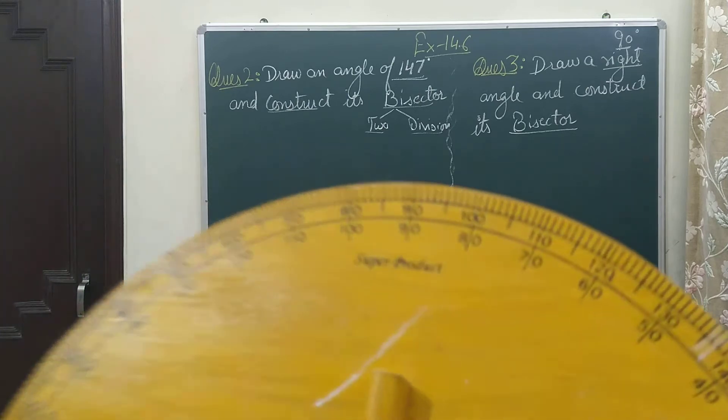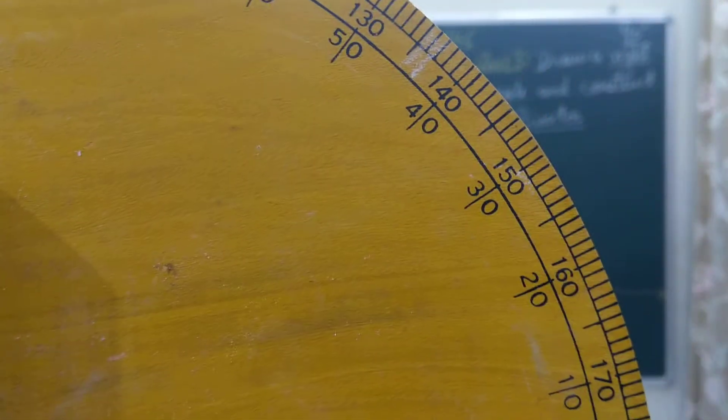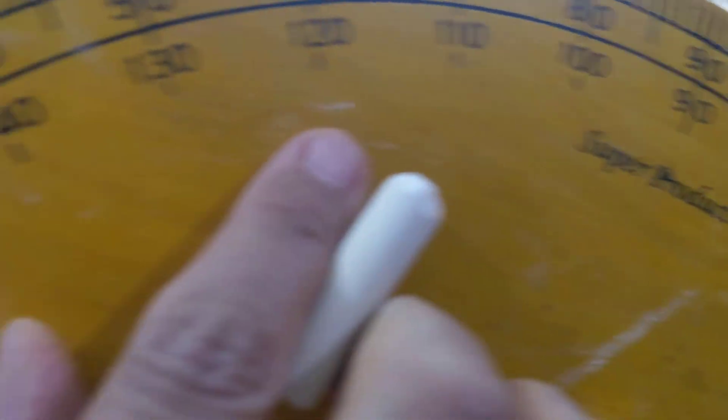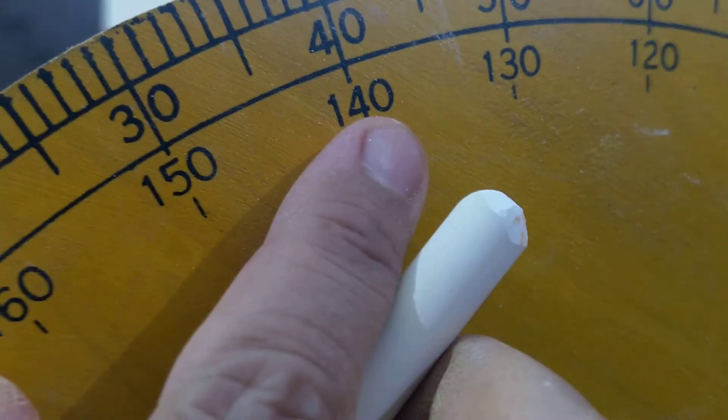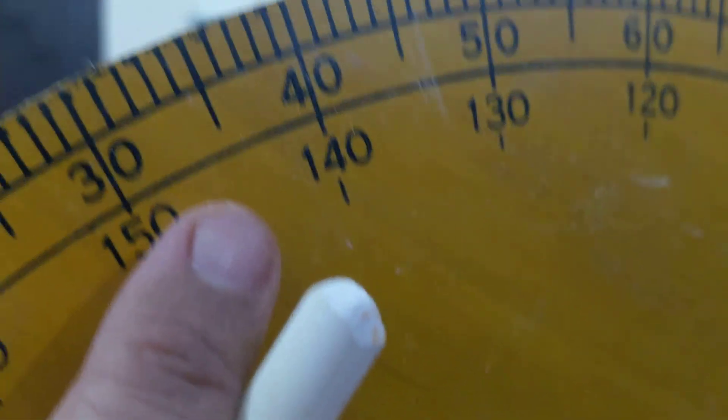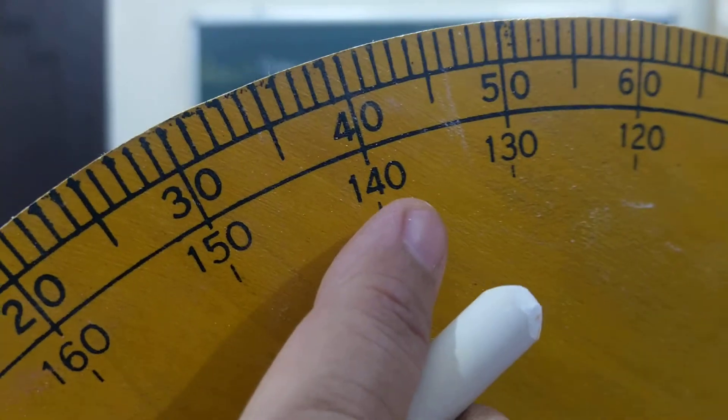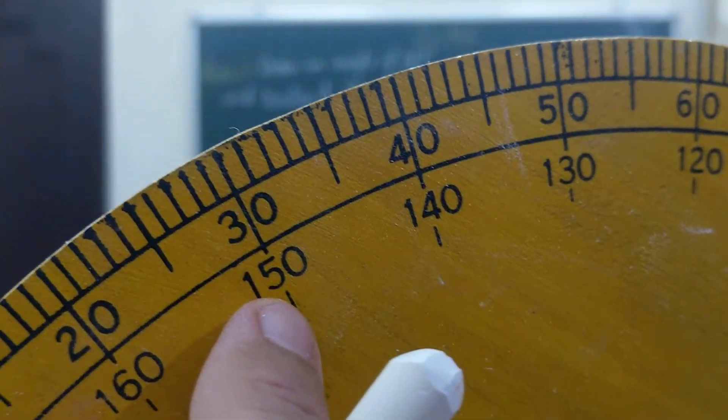If you see here, I need 147. This is the starting of inner angle: 0, 10, 20, 90, and here is 140. Now I need 147. These markings are given here in between, so between 140 and 150, 147 will lie.